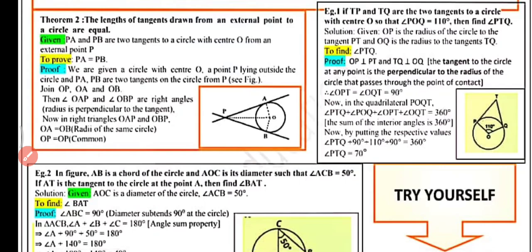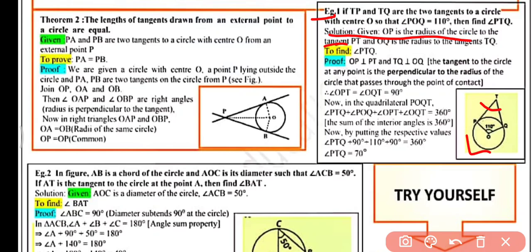Example 1: If TP and TQ are two tangents to a circle with center O, and angle POQ = 110°, find angle PTQ. Given that OP is the radius to tangent PT and OQ is the radius to tangent TQ.